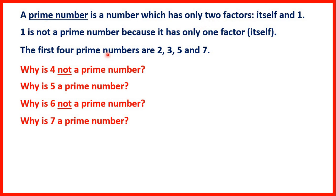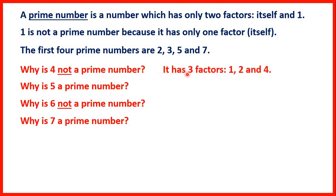The first four prime numbers are 2, 3, 5 and 7. So why is 4 not a prime number? Well, that's because it has three factors. 4 is in the 1, 2 and 4 times tables, so because it has more than two factors, it's not a prime number.